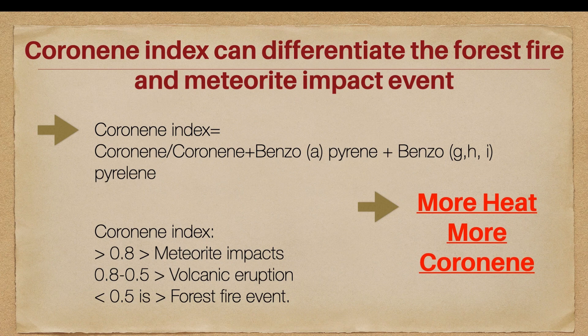Specifically, a coronene index value greater than 0.8 indicates a meteorite impact. A value between 0.5 and 0.8 indicates a volcanic eruption, which can also cause vegetation or terrestrial devastation. A value less than 0.5 indicates a normal forest fire event and vegetation collapse. These are the ways we identify forest fires or meteorite impacts. That concludes today's lesson on what is a biomarker and how we can apply biomarkers for forest fire, meteorite impact, or other paleo-environmental interpretation. If you have any questions, please comment below. Thank you very much, bye bye.